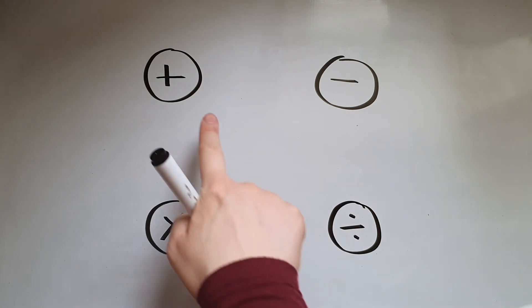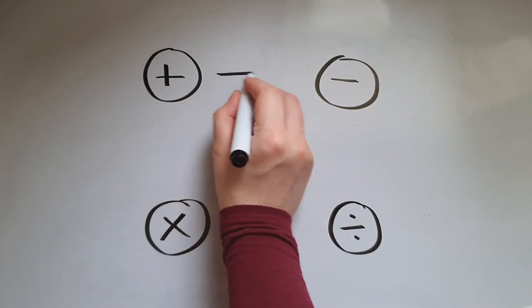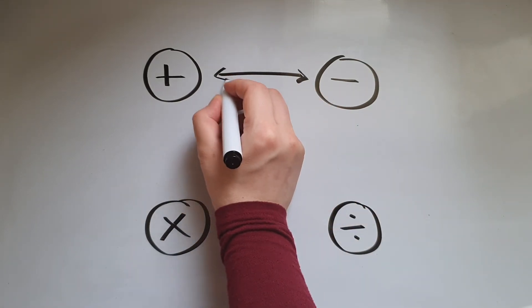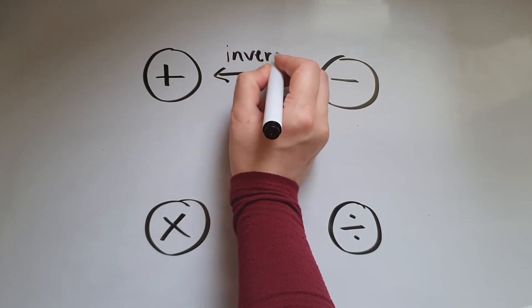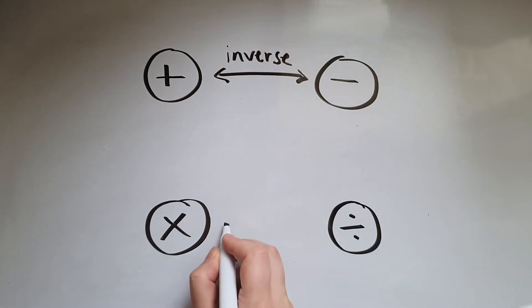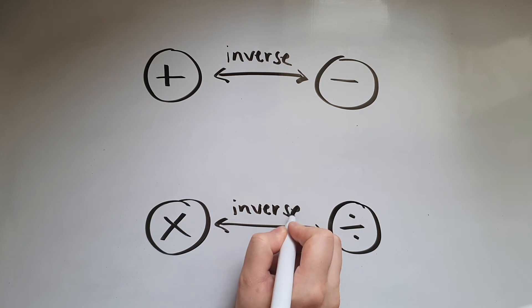So addition and subtraction are inverse operations, opposites as we randomly say. The same thing with multiplication and division.